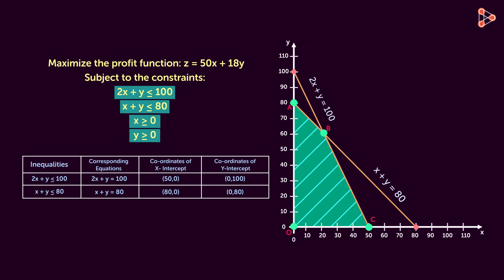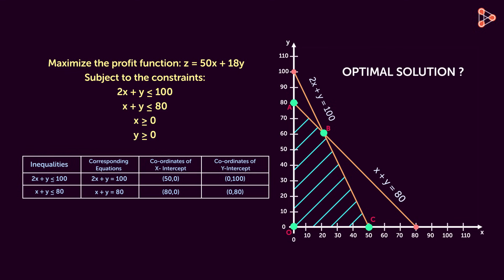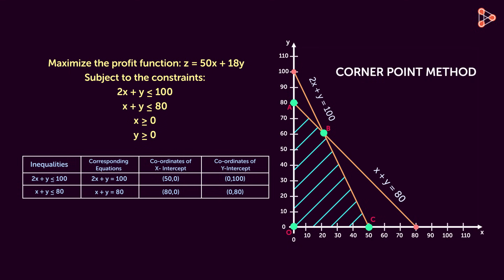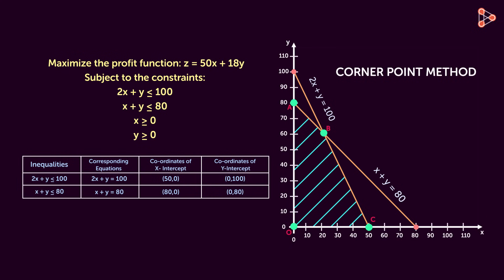Then how will we find the optimal solution? Since there are many possible solutions for this problem, we will use the corner point method to find the maximum profit. In this method, the solution of a linear programming problem lies on the corner point of a feasible region. The coordinates of the corner points are substituted for the values of x and y in the objective function. In this example, points O, A, B, and C are the corner points of the feasible region.